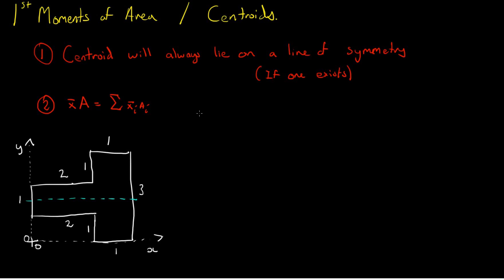The centroid can be considered the point at which all of the area acts. If you imagine balancing a shape on the end of your finger, the centroid is the point at which you have to place your finger to stop this situation from being unstable. It's also useful to find the coordinate of the centroid for calculations of simple beam bending, as this is what we call the neutral axis.